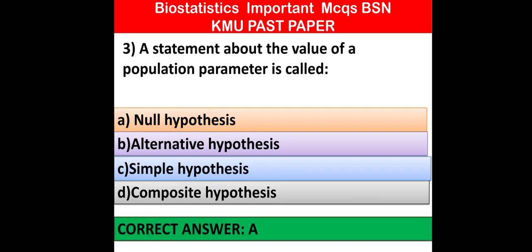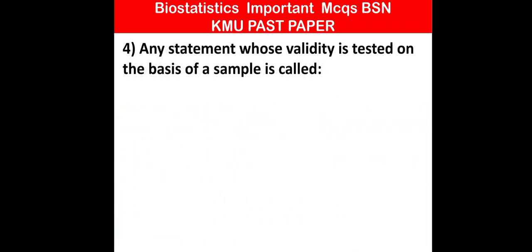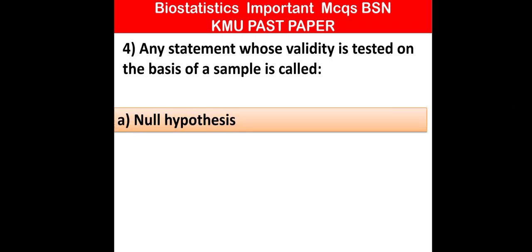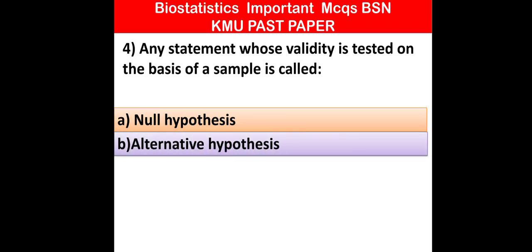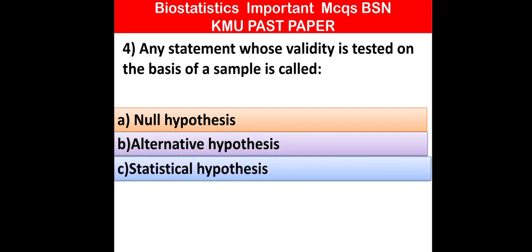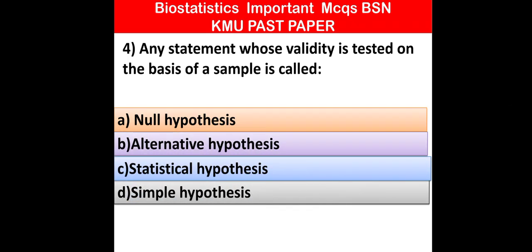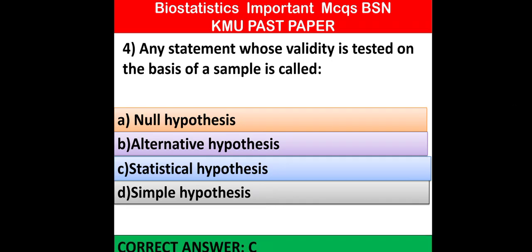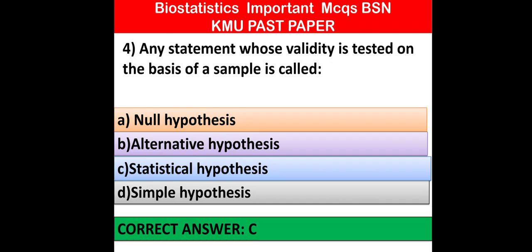MCQ number 4: Any statement whose validity is tested on the basis of a sample is called — null hypothesis, alternative hypothesis, statistical hypothesis, or sample hypothesis. Which one of the following is correct? Option C is correct: statistical hypothesis.